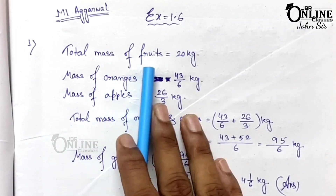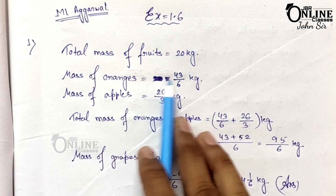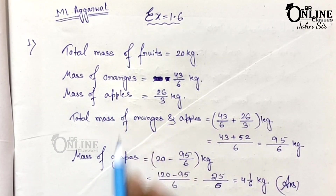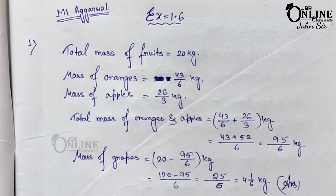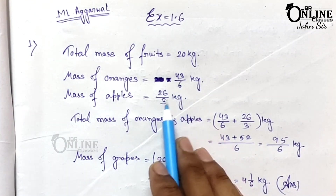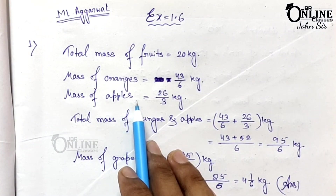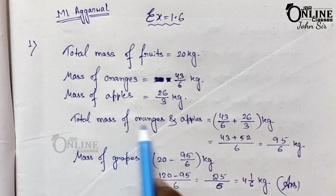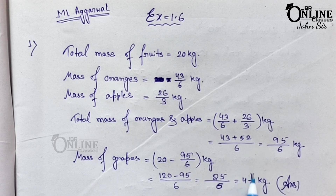Total mass of fruits equals 20 kg. Mass of oranges is 7 and 1/6, which means 43/6 kg. Mass of apples equals 8 and 2/3, which means 26/3 kg. Total mass of oranges and apples equals 43/6 plus 26/3, giving 95/6 kg. So mass of grapes equals 20 minus 95/6, which equals 25/6, that means 4 and 1/6 kg.